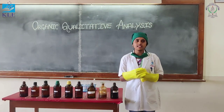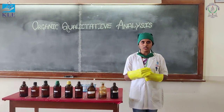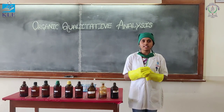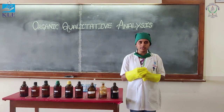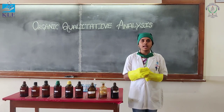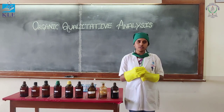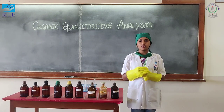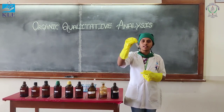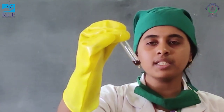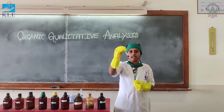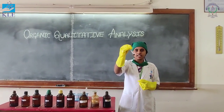The third test is Baeyer's test, also known as the action of KMnO4 — potassium permanganate. Take 0.2 grams of substance, add sodium carbonate and KMnO4 dropwise. The solution decolorizes, which means that the given compound has easily oxidizable side chains.